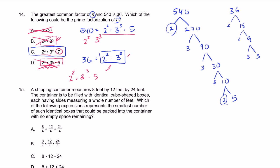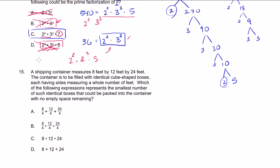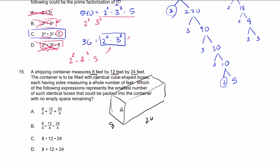Problem 15. A shipping container measures 8 feet by 12 feet by 24 feet. The container is to be filled with identical cube-shaped boxes, each having sides measuring a whole number of feet. We want the smallest number of identical boxes, meaning we need the biggest possible cube boxes that fit with no empty space. So the box side length has to equal the greatest common factor of 8, 12, and 24.